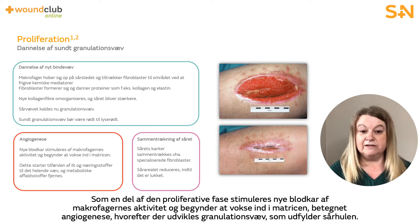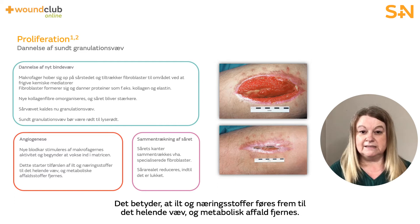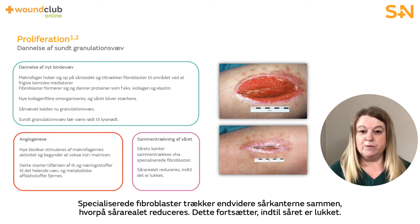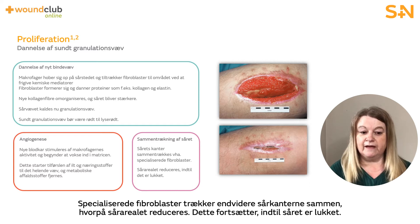As part of the proliferative phase, new blood vessels are stimulated by macrophage activity and begin to grow into the matrix — this is known as angiogenesis. This means that extra oxygen and nutrients are delivered to the healing tissue and metabolic waste can be removed. Specialised fibroblasts also pull together the wound edges, reducing the surface area of the wound, and this continues until wound closure.